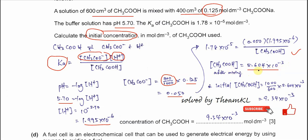This is the concentration of ethanoic acid in the buffer. Now back-calculate the initial concentration of the acid. Because 600 cm³ was diluted to 1000 cm³, use the factor 1000/600. Initial concentration = (1000/600) × 5.604 × 10⁻³ = 9.34 × 10⁻³ mol dm⁻³. This is the answer.